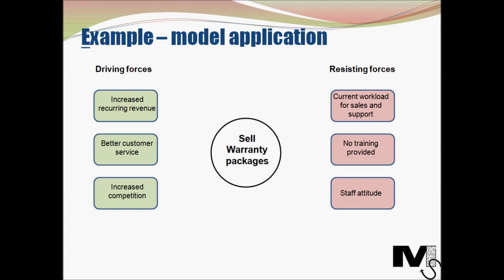If we start weighing or scoring these driving and resisting forces: increased recurring revenue is obviously the highest and most important factor driving this change, so we give it a score of 10. Then better customer service — customer service can be improved by providing better quality products — so we score it a 7. Then increased competition: a market always has more and more competitors coming in and we want to stand out, so we give it a score of 8.